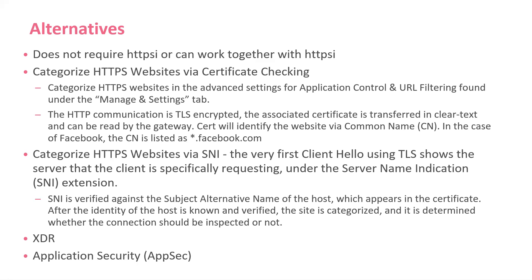The other thing we can do is categorize with SNI. Even though everything's encrypted, we can actually see the subject alternative name of the host, which is below the certificate. We can categorize on that — whether we want the connection to be inspected or not. This is actually a helper; you can use it with HTTPS inspection or without, which is pretty cool.